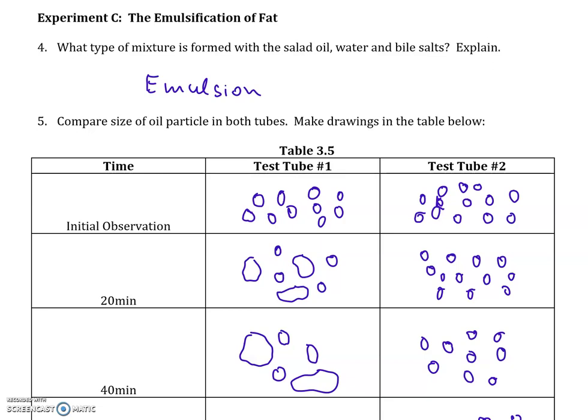Continuing with experiment C: when you are adding an emulsifier, which is a substance that enables fat droplets to suspend in water, the result is called an emulsion. You're using these kinds of things all the time — milk is an emulsion, and all your lotions and creams are also emulsions.